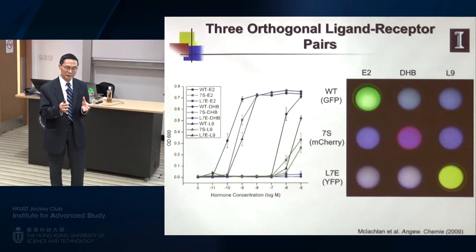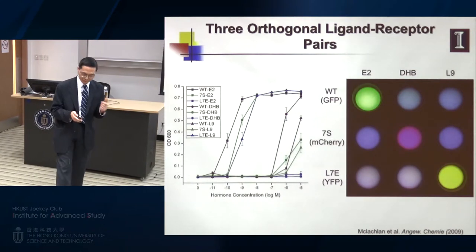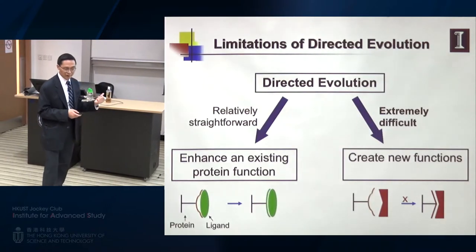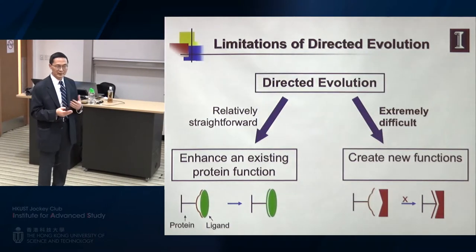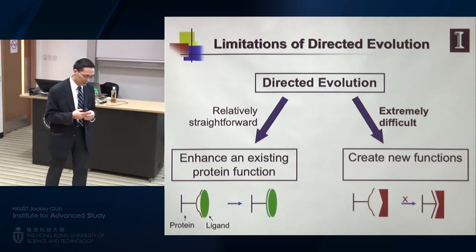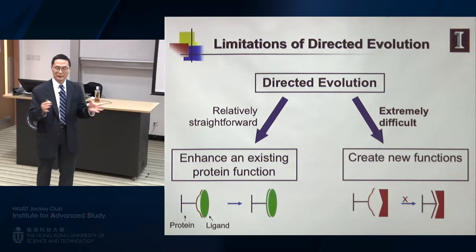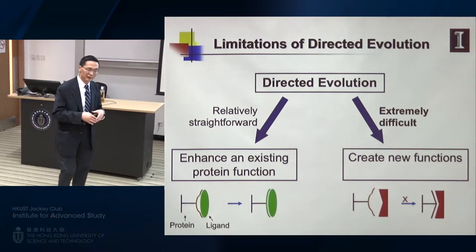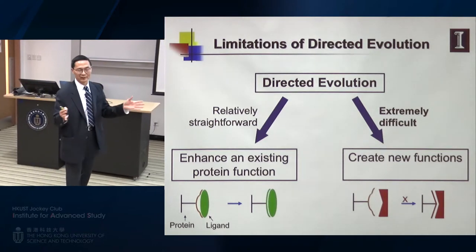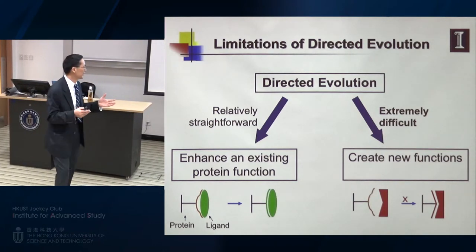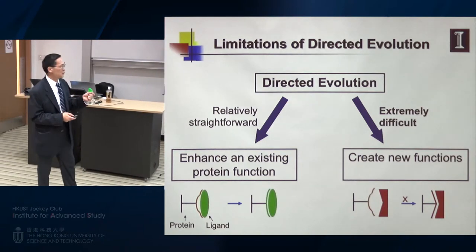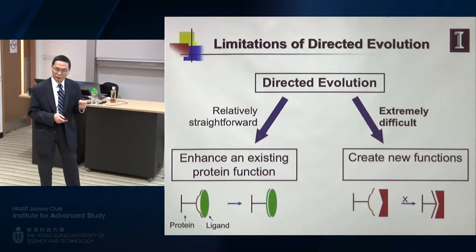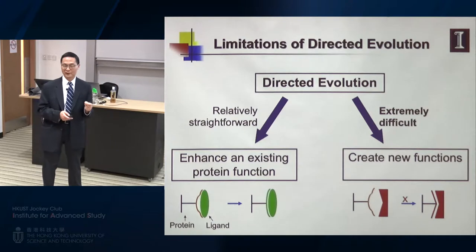With this system, we can now regulate multiple gene expressions in mammalian cells independently. We are more fascinated by the creation of new functions, not just improving existing ones. Although we achieved 10^10-fold improvement, it's still not a new function. So we became very interested in whether we can really create new protein functions.